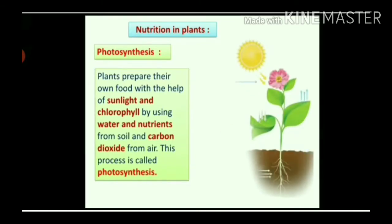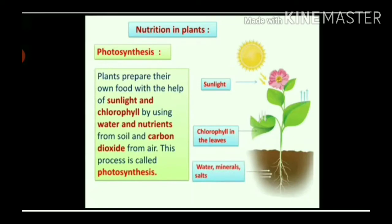Observe the diagram. Plants get sunlight during day time, and sunlight is necessary for photosynthesis. Chlorophyll is present in leaves, so plants prepare food using sunlight and chlorophyll. Then plants take water, minerals and salts from soil through roots. Plants get carbon dioxide from air. In this way, carbon dioxide, water, minerals, salts, sunlight and chlorophyll are the constituents necessary for the process of photosynthesis.